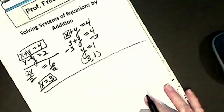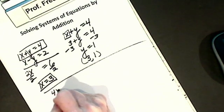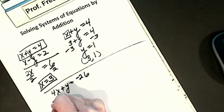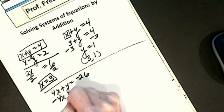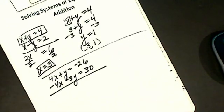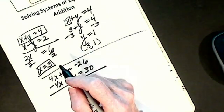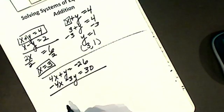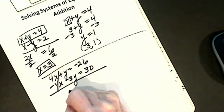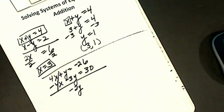Let's do another one. Let's say I have 4x plus y equals negative 26 and minus 4x minus 3y equals 30. I'm going to solve the system by addition. I see my 4x's go to zero. There's a real coefficient of one there — you can't forget the one. I subtract, take the sign of the larger, I get minus 2y.